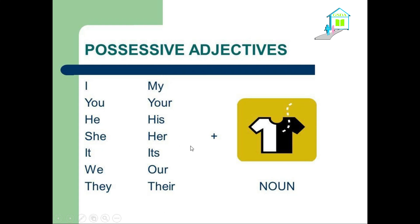But move on to this side here — we have my, your, his, her, its, our, and their. Those are not subject pronouns, but they are possessive adjectives. So we use those with nouns, not with verbs. For example: my t-shirt — t-shirt is a noun. Your t-shirt, her school, its sound, our home, their books, etc. We use those possessive adjectives with nouns.